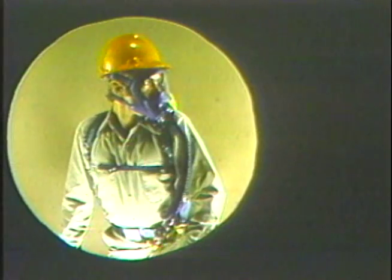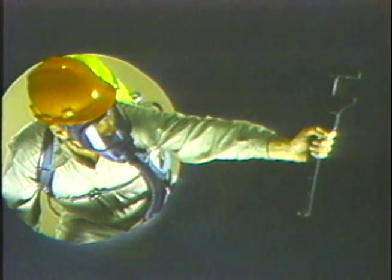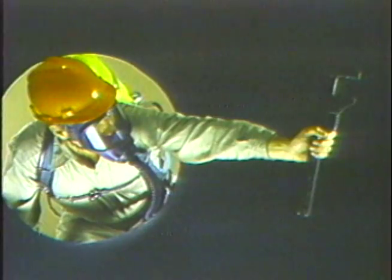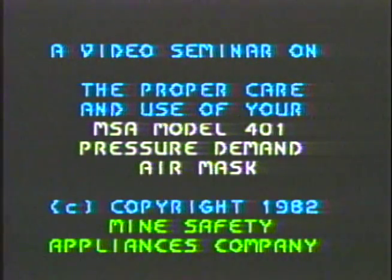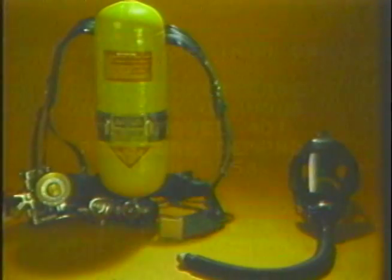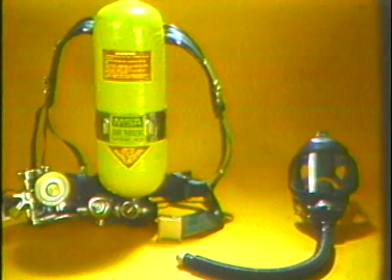When working in a potentially hazardous atmosphere, you must be cautious and alert. Learn how to use the breathing protection device issued by your company: the MSA pressure demand air mask. It was chosen because it provides the ultimate in respiratory protection for emergency use in atmospheres immediately dangerous to life and health. Regard the pressure demand air mask as you would any tool — learn how it works, how to use it properly, and give it the right kind of care.